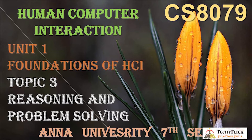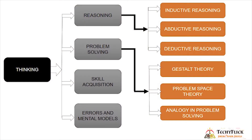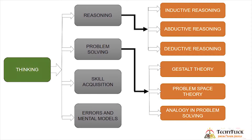Topic 3: Reasoning and Problem Solving comes under the topic of thinking. Thinking is divided into four types: Reasoning, Problem Solving, Skill Acquisition, and Errors and Mental Models.